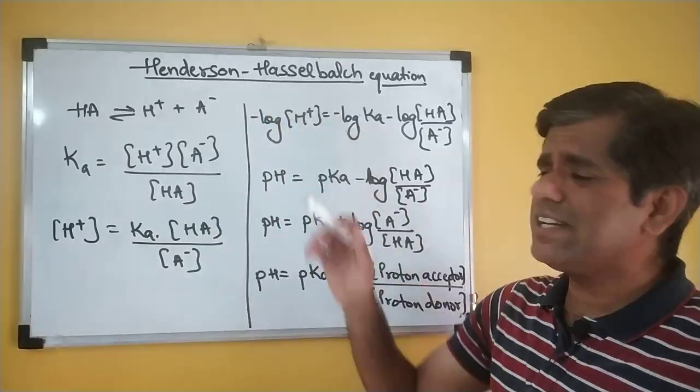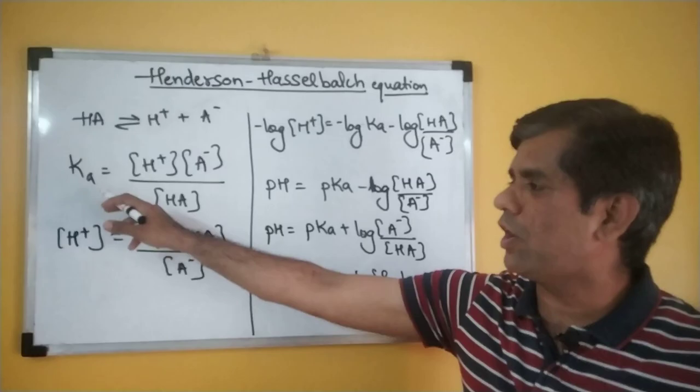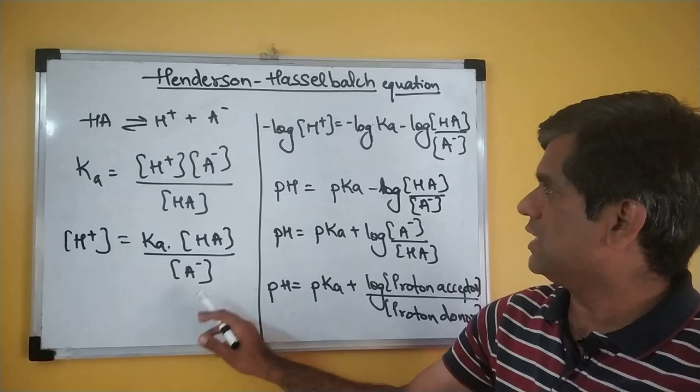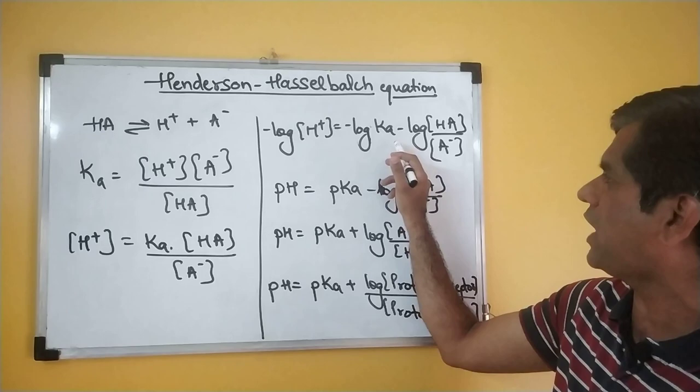The Henderson-Hasselbalch equation: the weak acid dissociates, and solving for Ka, which is H⁺ times A⁻ upon HA. Solving for H⁺ and taking the negative logarithm, we have: negative log of H⁺ is equal to negative log of Ka minus negative log of HA upon A⁻, substituting the values of pH and pKa.